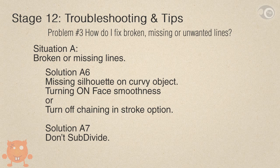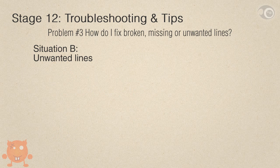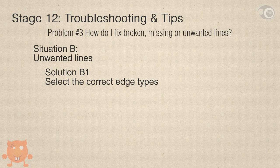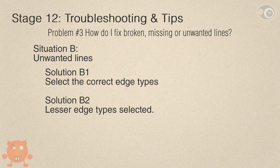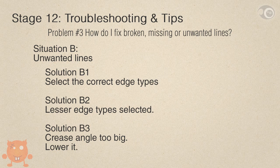Solution A7: don't subdivide. A mesh with less density will break less. Situation B: unwanted lines, which are generally caused by too many selections. Solution B1: select the correct edge types, which leads to Solution B2: lesser edge types selected. To solve this fully, go back and watch the selection stages. Solution B3: another cause of unwanted lines is the crease angle being too big, so the solution is to lower it until the problematic lines are gone.